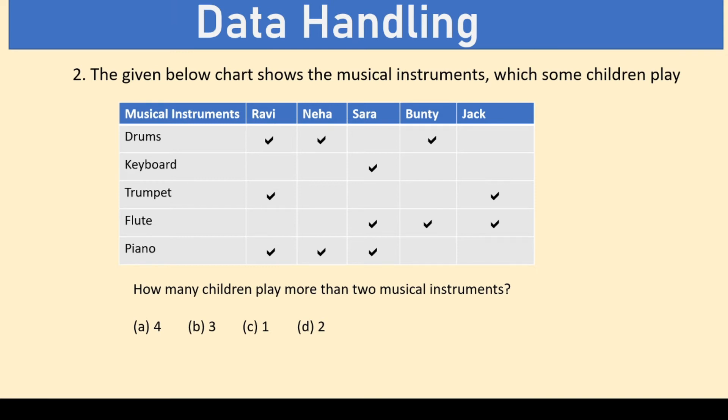Next question continues with the same chart and the question asked is how many children play more than two musical instruments? That means which of the columns has more than two tics? So, Ravi is one of the option. Neha just has two so we do not consider that. Sara has more than two tics. Bunty has two so we do not consider and Jack also has two because we need to find more than two. So, the answer is Ravi and Sara which is option D. Two students play more than two instruments.